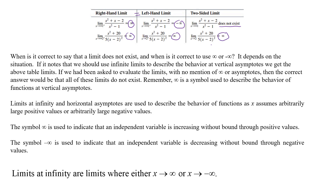So when is it correct to say that a limit does not exist, and when is it correct to use positive or negative infinity? That all depends on the situation. If we should use infinite limits to describe the behavior at vertical asymptotes, we get the above table. But if we've been asked to evaluate the actual limits with no mention of infinity or asymptotes, then the correct answer would be that all of these limits do not exist. Remember, infinity is a symbol used to describe the behavior of the function at vertical asymptotes.